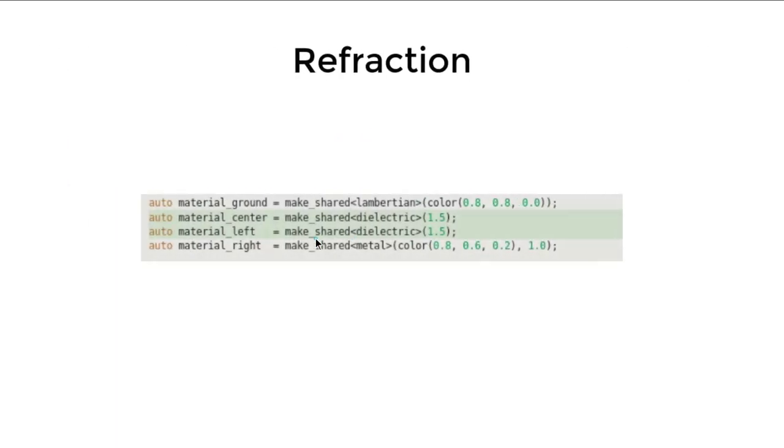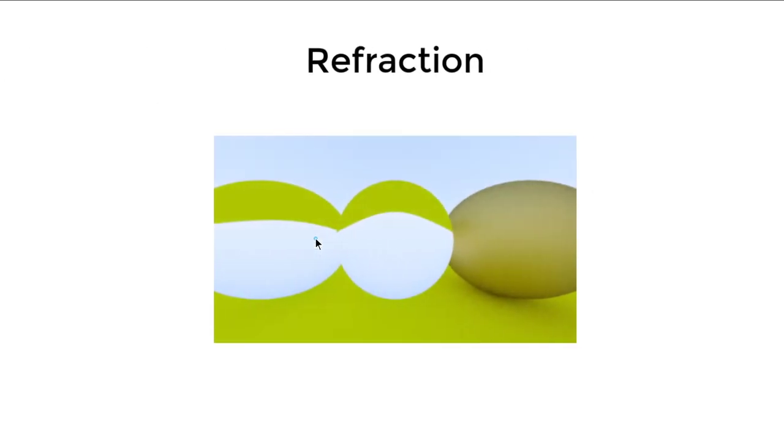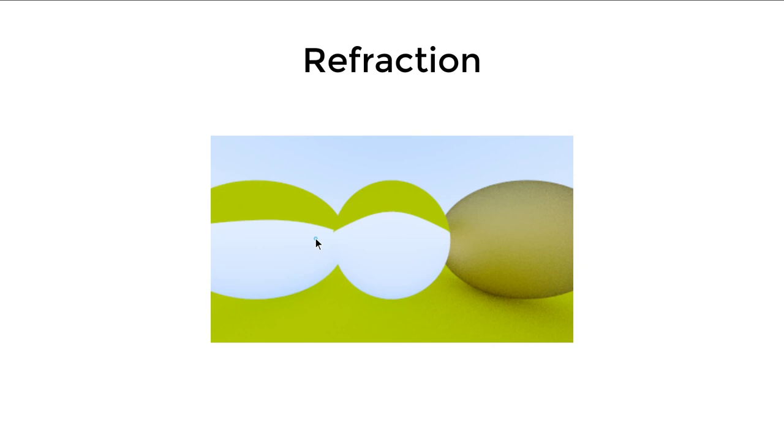So the problem is Snell's law not always have a solution. We call that condition total internal reflection. So when an angle between the light and the surface is too small, we will not have a solution for the Snell's law. And it will always reflect instead of refract. And we are not considering that situation yet.